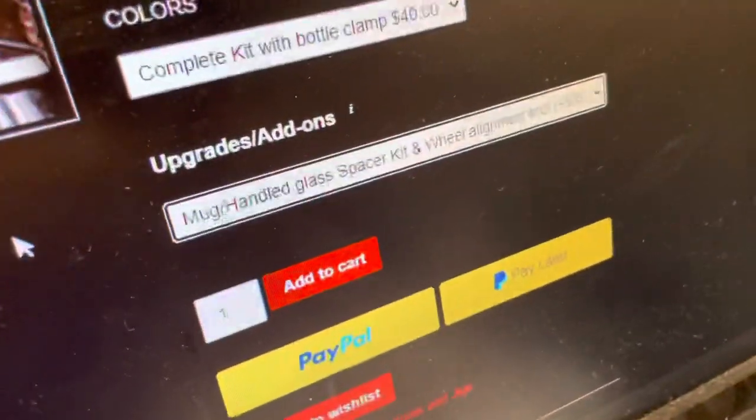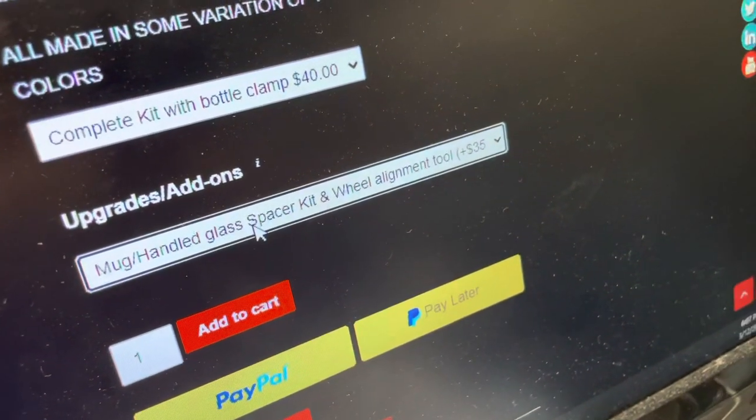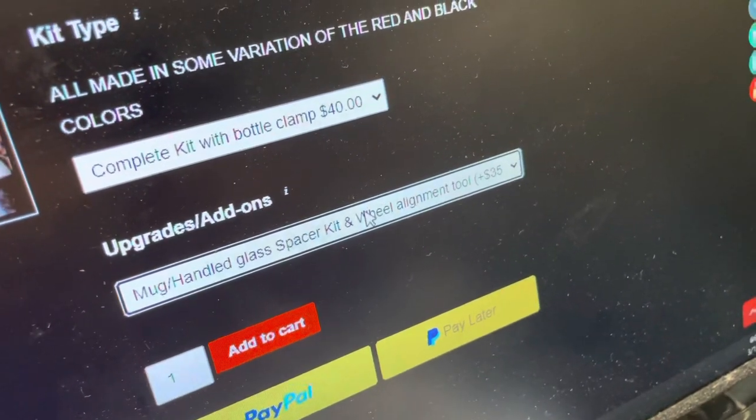So the other thing that I forgot to show you, there's an additional upgrade option. Mug handle glass spacer kit. I went ahead and got the alignment tool as well, but I got that upgrade as well because that is what allows me to do that big beer mug style of glass that you see here. That spacer here on the right side, what that does is it puts it far enough away from the wheels down here. Because if you don't have that spacer, that handle is going to hit that nut on the pulley down there that you see.